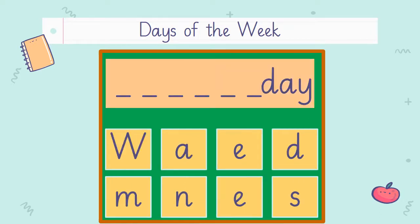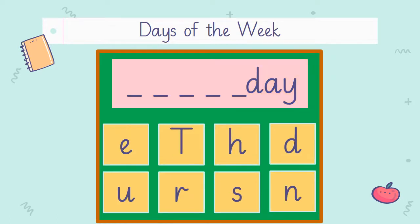Which day comes after Tuesday? Wednesday! Very good! Now choose the correct letters given below and complete the spelling of Wednesday on the green board and show it to your teacher. After Wednesday, which day comes? Yes — Thursday! Now choose the correct letters to complete the word Thursday on the green board and show it to your teacher.